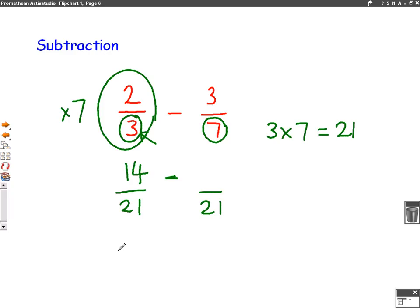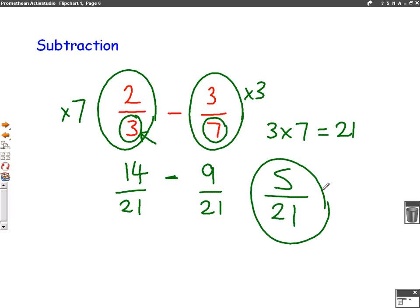Now, we do the same on the second fraction. The bottom of the fraction was 7. What do we have to multiply it by to get 21? Well, the answer's 3. We must multiply it by 3. 7 times 3 is 21. The top of the fraction was 3, but we multiplied it by 3, which gives us 9. So, now we have our question with the same bottom number. Both fractions have now got 21. So, we can just take them away. 14 take away 9 is 5, and the bottom of the fraction always stays the same, 21. So, 5 out of 21 is our answer.